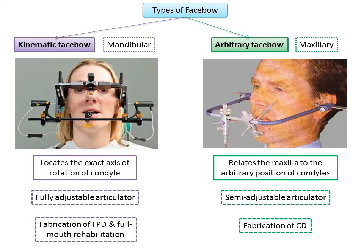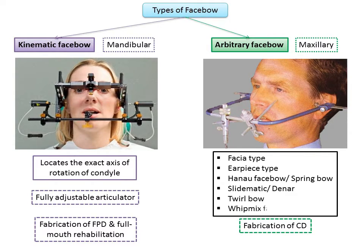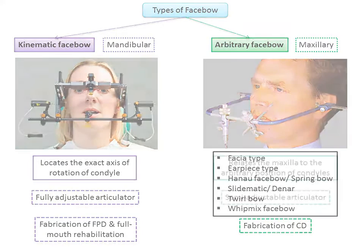Arbitrary facebow is quite commonly used in clinical practice and is used in fabrication of complete dentures. There are different types of arbitrary facebow such as fascia type, earpiece type, Hanau facebow, spring bow, Slidermatic or Denar 12 bow, and Whip Mix facebow. We discussed fascia type, earpiece type, and Hanau facebow in the previous presentation.